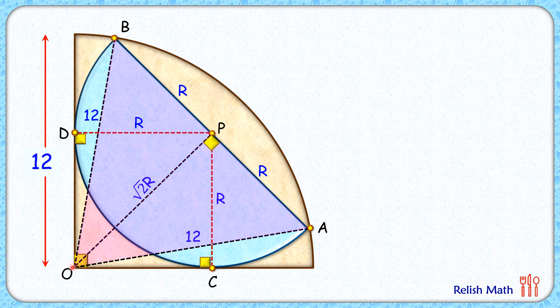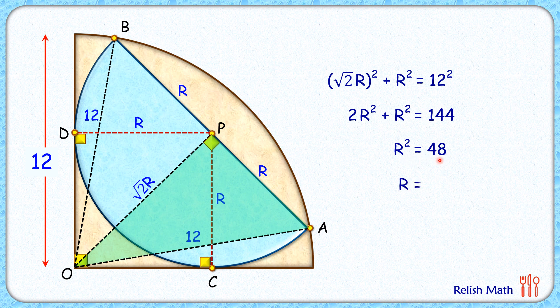If we concentrate on this right angle triangle OPA, we can apply Pythagoras theorem. We'll get (√2R)² + R² = 12². Simplifying it: 2R² + R² = 144, so 3R² = 144, or R² = 48. Taking square root on both sides, we get R = 4√3 centimeters.